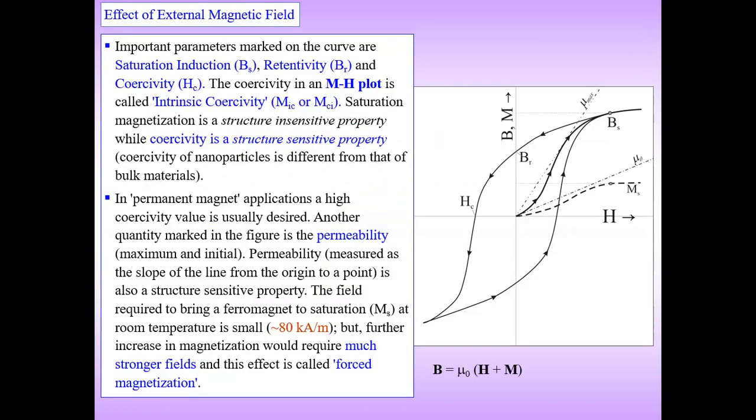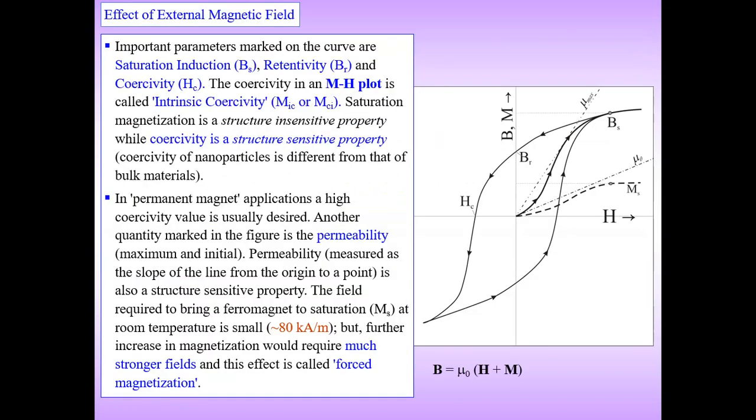Now we look at the effect of an external magnetic field. This is the hysteresis loop for a ferromagnetic material.